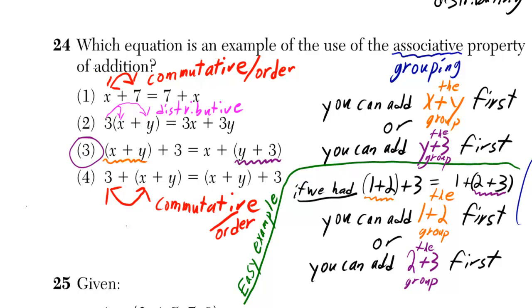Now one other thing here is if you change the plus signs to times signs in examples one, three, and four, then it's still the commutative and associative properties but not of addition anymore, of multiplication.